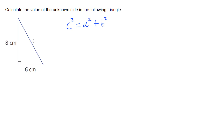To work this out I'm going to label my triangle. Hypotenuse is always c, and I'm going to label my two short sides a and b. It doesn't matter which one is a and which one is b.